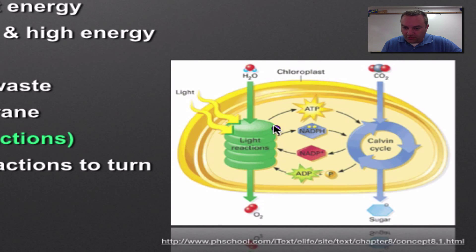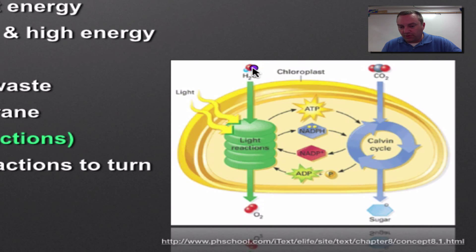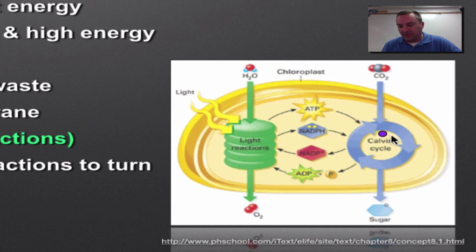The thylakoid membranes are these little green poker chips. Light hits them and electrons jump off, picked up by an electron carrier called NADPH. Some electrons are used to make ATP. These two things supply the power to make the Calvin cycle work out in the stroma. When water is split it replaces the electrons lost by chlorophyll, and the waste product is oxygen. During the Calvin cycle, carbon dioxide from the atmosphere is turned into a sugar molecule using ATP and high-energy electrons. That is photosynthesis in a simplified version.